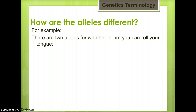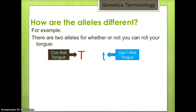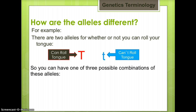Here is an example. There are two alleles for whether or not you can roll your tongue. Can roll tongue, which is represented with a capital T, because it is dominant. And can't roll tongue, which is represented with a lowercase t, because it is recessive. So you can have one of three possible combinations of alleles: capital T capital T, capital T lowercase t, and lowercase t lowercase t.